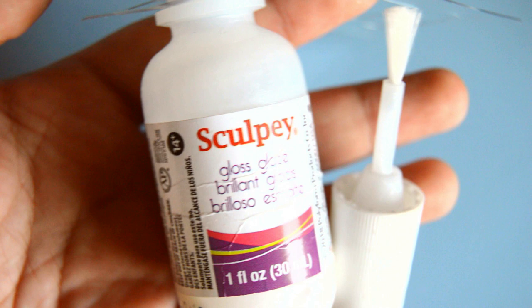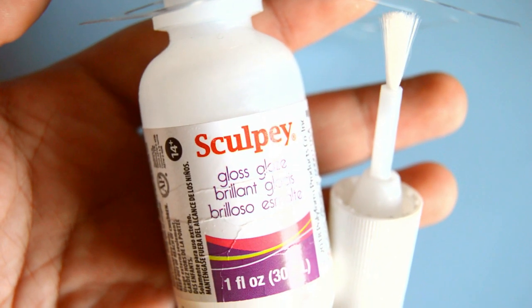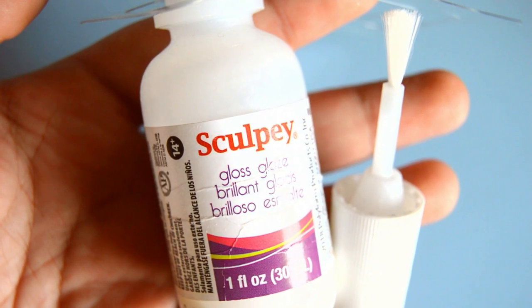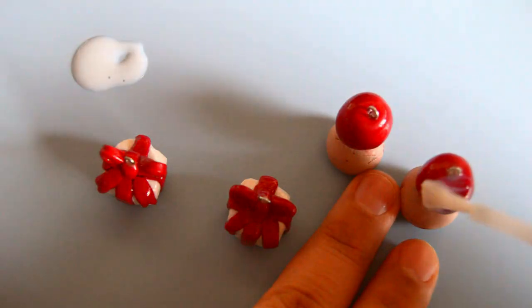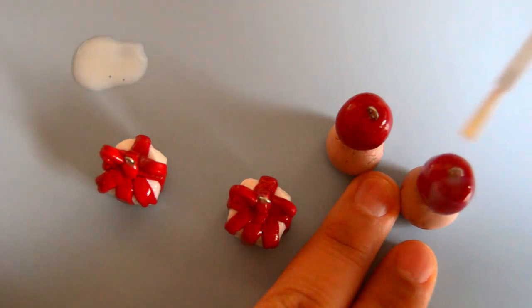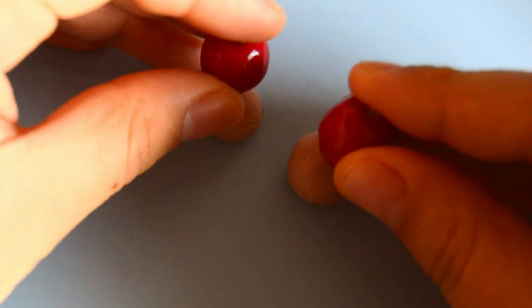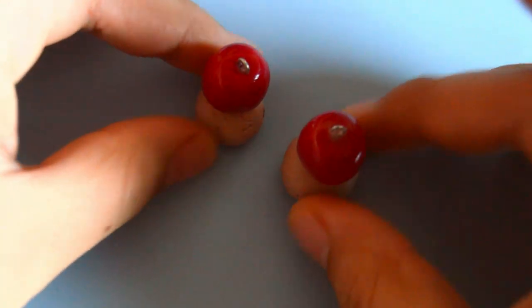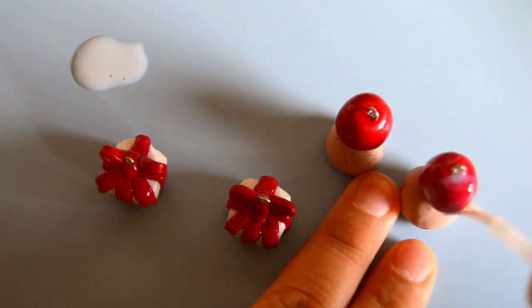Something that's totally optional but I do recommend doing is glazing your pieces. I use Sculpey gloss glaze to glaze all of my pieces. I did four total coats of glaze for these pieces just because I wanted them to be extra shiny. When glazing the balloons, a tip that I recommend doing is placing them into scrap pieces of clay so that when you glaze them, they can stand upwards when they dry.